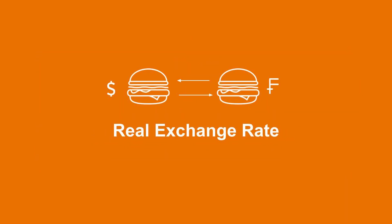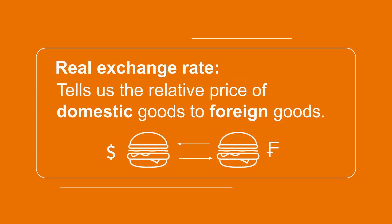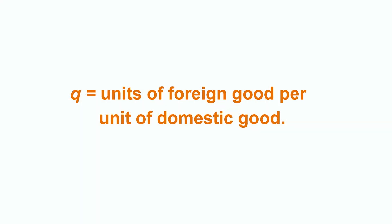Now let's talk about the real exchange rate. Whenever we label something 'real' in economics, it means the unit of measurement for this variable is no longer in monetary terms. Real exchange rate tells us the relative price of domestic goods to foreign goods. In other words, it describes the amount of foreign goods you can purchase by giving up one unit of domestic good. Note that the definition of the real exchange rate parallels the definition of the nominal exchange rate — units of foreign goods per unit of domestic good.